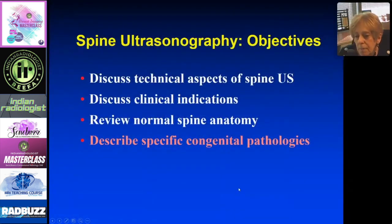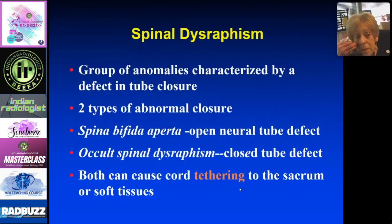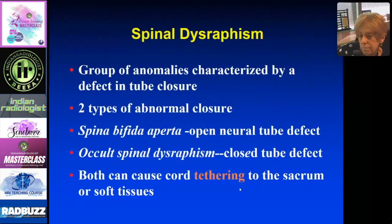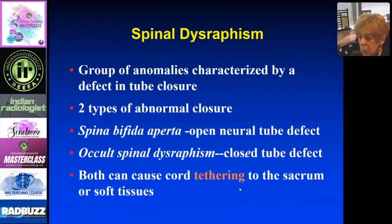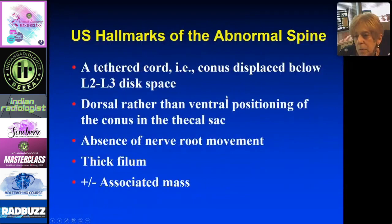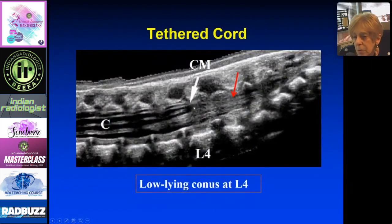The pathologies are not very common, but we'll review them. They are classified into two types: abnormal closure of the spine and skin — spina bifida aperta, or open neural tube defect — and closed spinal dysraphism. The problem with any dysraphism is that it can tether the cord, leading to problems with bowel and bladder control and neuromuscular issues. A tethered cord means the conus is displaced below L2-L3 and is more dorsal in position. The nerve roots don't move, the filum may be thickened, and you may see a mass. A conus at L4, for example, is all it takes to call a tethered cord.